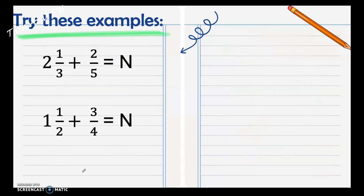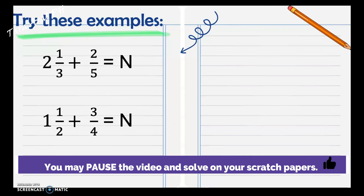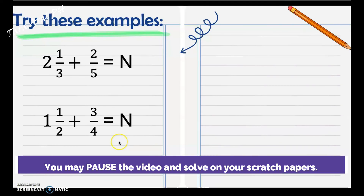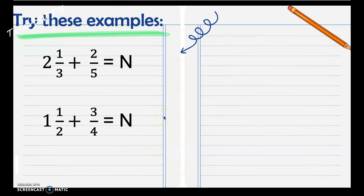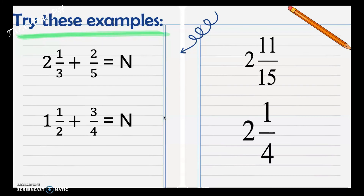Now try these examples on your own. Once you're done, check your answers. One and one third plus two fifths equals two and eleven fifteenths. One and one half plus three fourths equals two and one fourth.